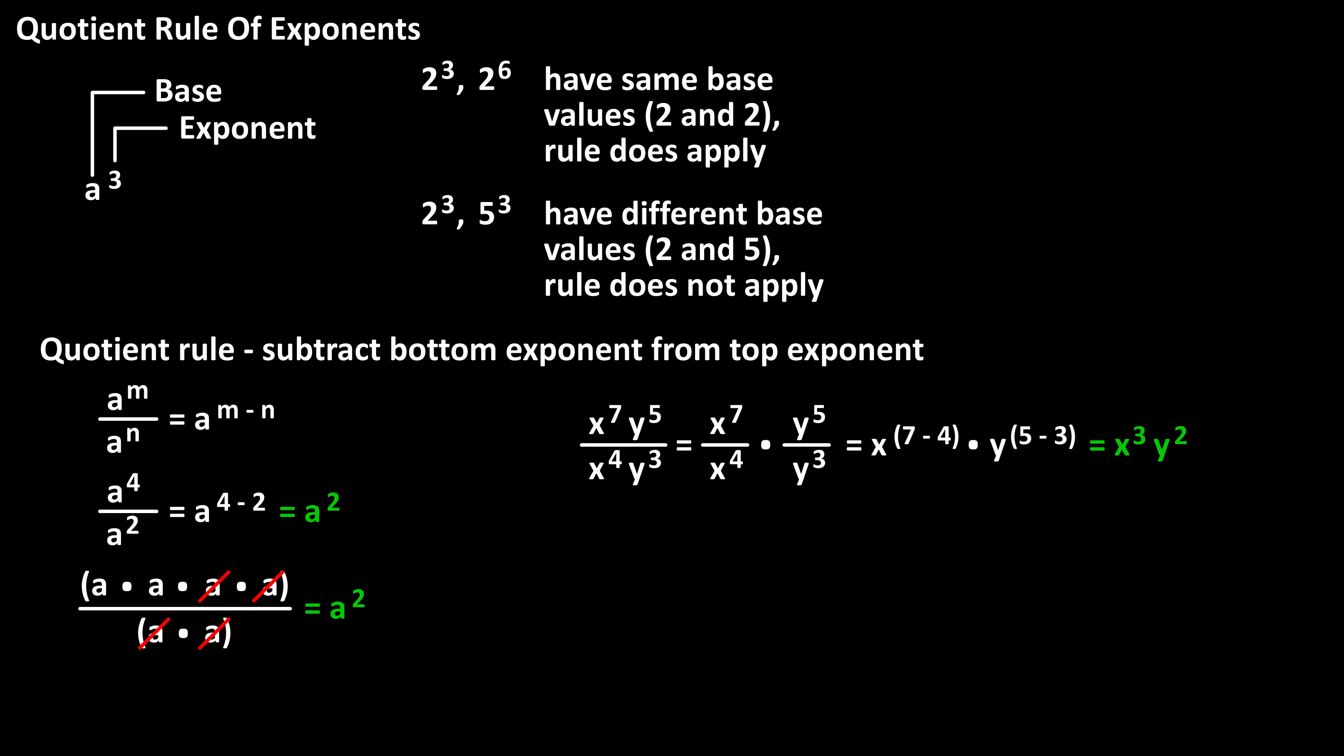One last example. If we had x to the 4 divided by x to the 9, we have x raised to the 4 minus 9, which equals x raised to the negative 5. And for a base with a negative exponent, we can make it a fraction with 1 as the numerator and the base with a positive value of the exponent in the denominator. So this equals 1 over x to the 5.